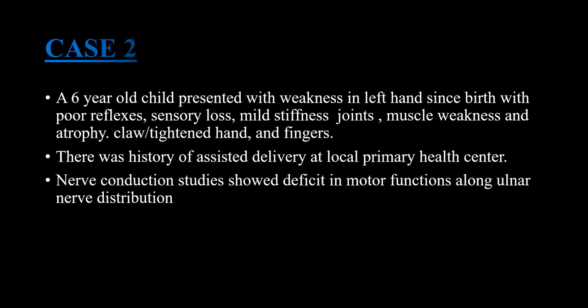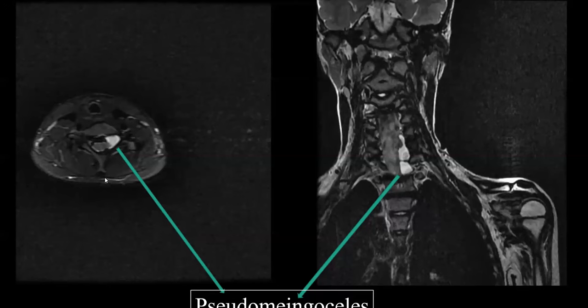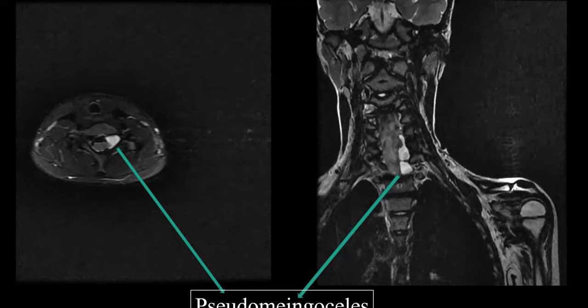Another case: a 6-year-old child presented with weakness in the left hand since birth, with poor reflexes, sensory loss, mild stiffness, joint and muscle weakness and atrophy, claw hand and fingers. There was history of assisted delivery at a local PHC. Nerve conduction study showed deficit in motor function along the ulnar nerve distribution. MRI shows a well-defined dumbbell-shaped cystic lesion in the left C7–T1 and T1–T2 neural foramina, which is extradural and extends just beyond the neural foramina. The right C8 and T1 nerve roots are not visualized, suggestive of pseudomeningocele and pre-ganglionic brachial plexus injury.